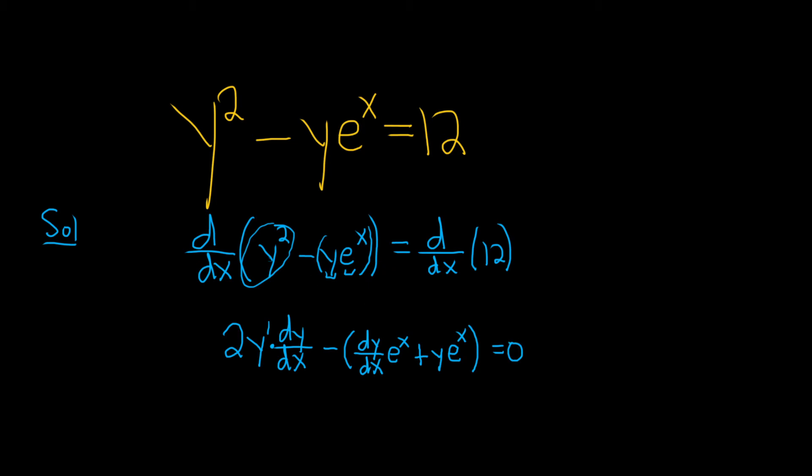Let me just refresh your memory on the product rule. If you have two functions, f times g, f is the first function, g is the second. It's the derivative of the first times the second plus the first times the derivative of the second. So here, it's the derivative of y, which is dy/dx, times the second, which is e to the x, plus the first, which is y, times the derivative of e to the x, which is e to the x.